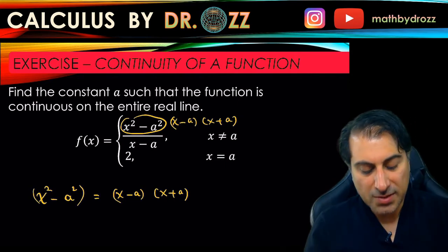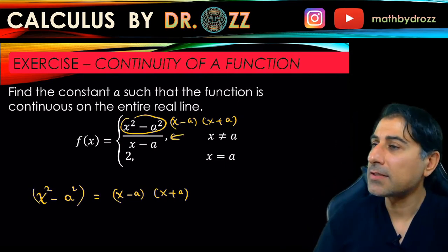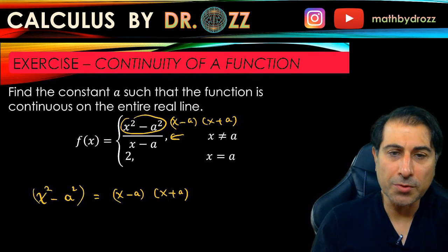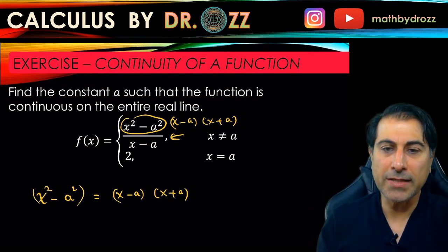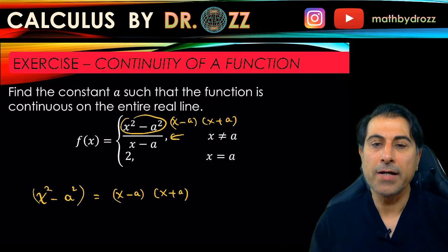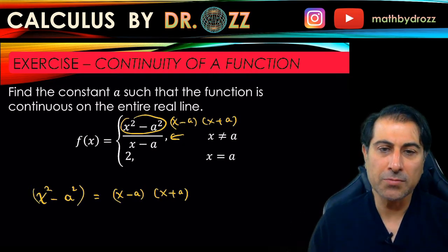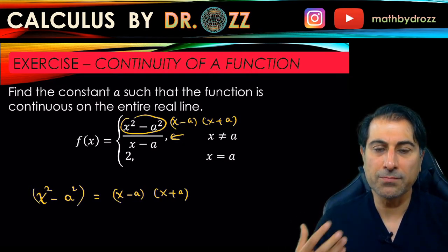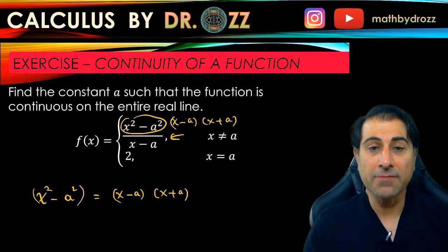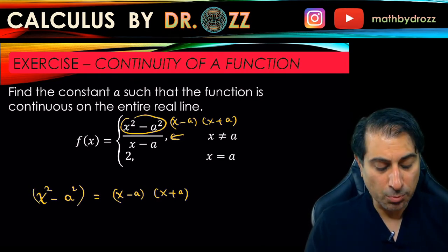So this piece here is obviously not defined at x equals a because when you plug in x equals a, even though we don't know what a is, the bottom becomes zero, top becomes zero, so you have zero over zero. That piece over there is not defined at x equals a.